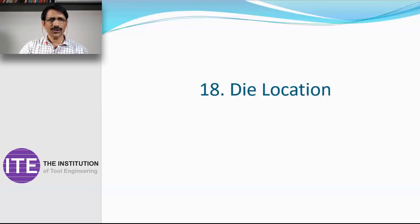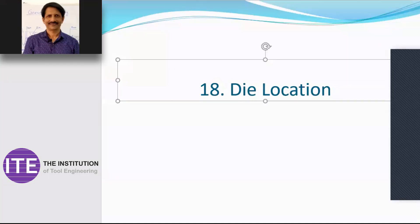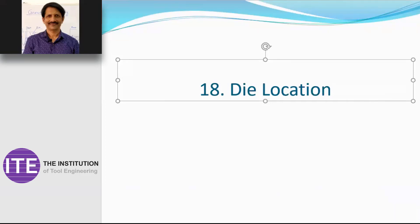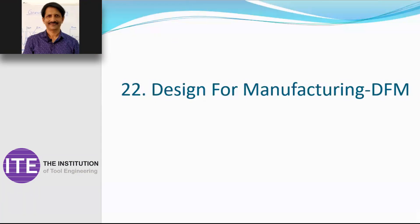Die location is a huge subject. You can use a tenon or a dowel — dowels are very important in die designing. Other related points include die operating systems and loose space mechanisms, which will be covered in a separate lecture. These are interesting areas that deserve their own dedicated session.